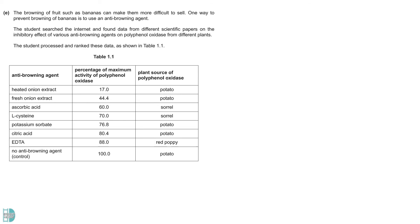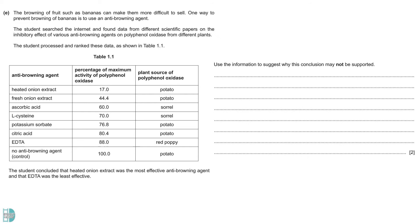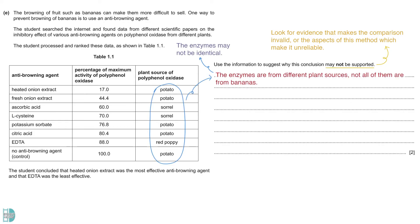In E, we have a table that shows the inhibitory effects of various anti-browning agents on polyphenol oxidase from different plants. The student concluded that heated onion extract was the most effective anti-browning agent and that EDTA was the least effective. Use the information to suggest why this conclusion may not be supported. You should look for evidence that makes the comparison invalid, or the aspects of this method which makes it unreliable. First, the enzymes are from different plant sources. This means that the polyphenol oxidase may not be identical. It is not a valid comparison if they are not the same.